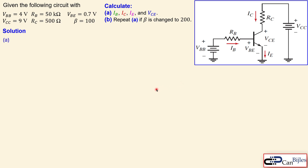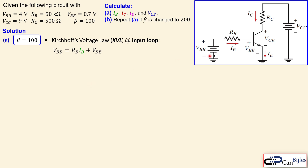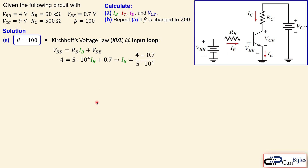For solution part A with beta equal to 100, we apply Kirchhoff's Voltage Law (KVL) at the input loop. We can write that VBB equals the voltage across RB plus VBE. The voltage across RB is given by Ohm's law: RB times IB, the base current. Substituting the given values — VBB equals 4V, RB equals 50kΩ, and VBE equals 0.7V.